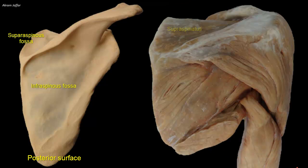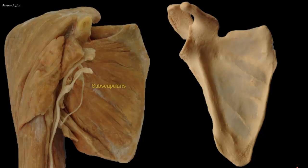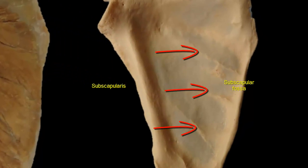The supraspinatus occupies the supraspinous fossa, the infraspinatus occupies the infraspinous fossa, and the subscapularis occupies the subscapular fossa. Note that the subscapular fossa is marked by three or four ridges that give attachment to fibrous septa.